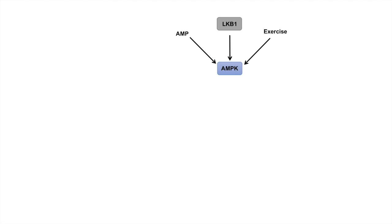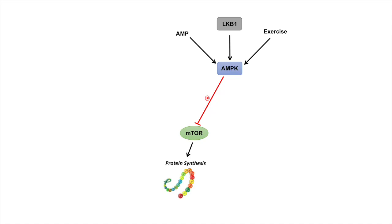So what does AMPK actually do in the cell? First, AMPK is a negative regulator of mTOR signaling — mammalian target of rapamycin. It phosphorylates and inactivates mTOR, which itself is an activator of protein synthesis. So AMPK will actually suppress protein synthesis.